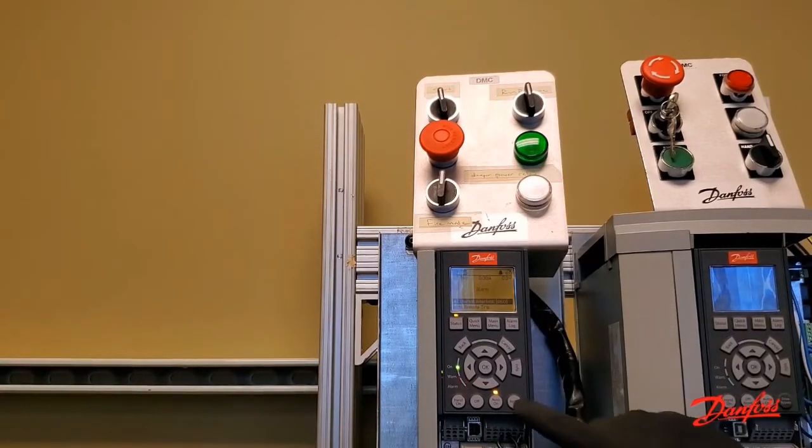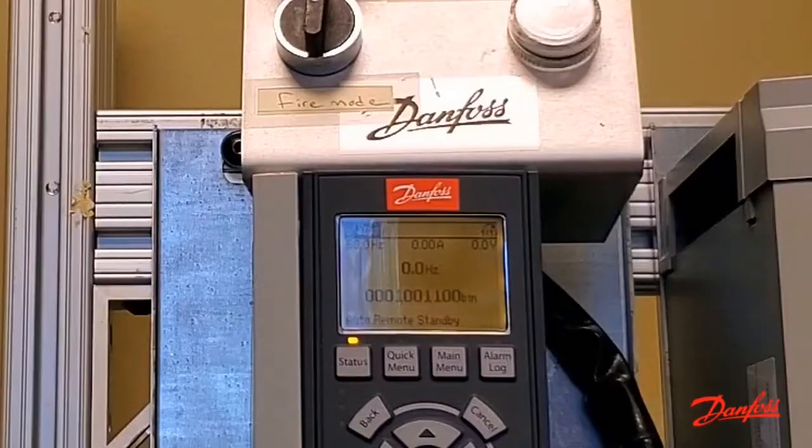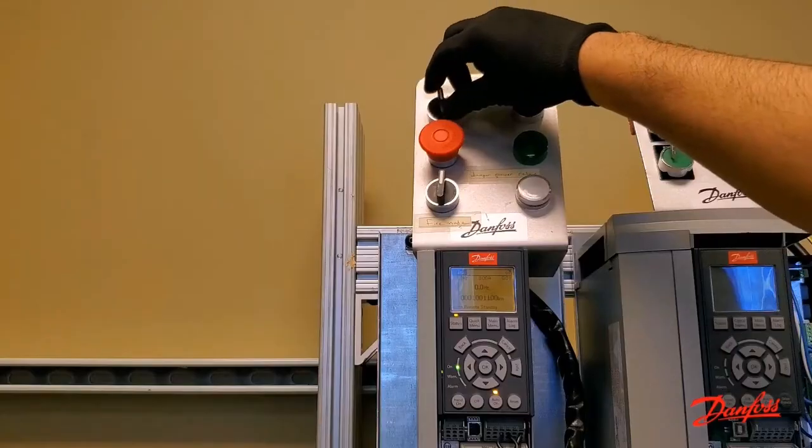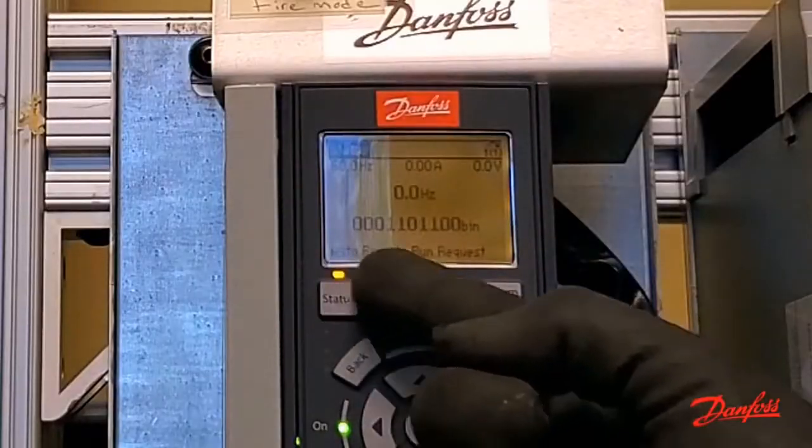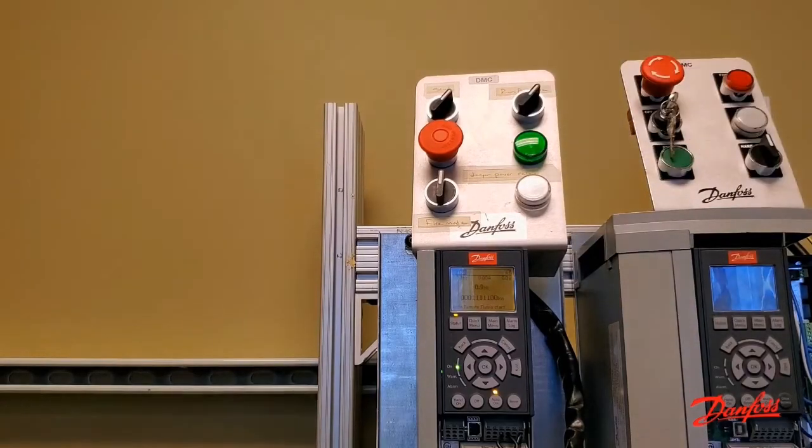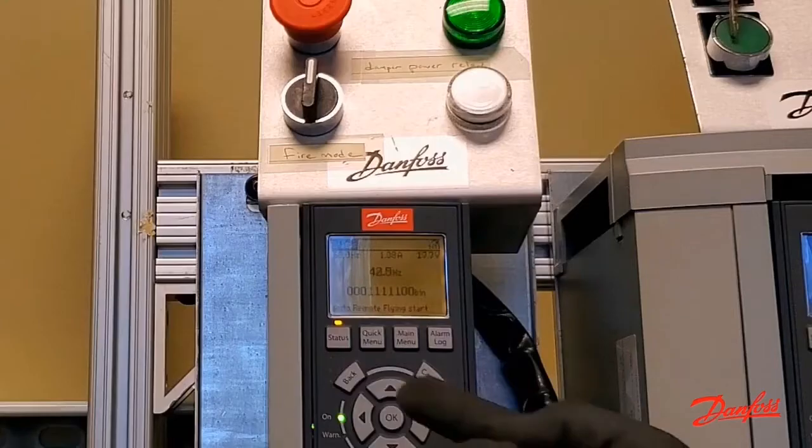Auto-remote standby means you're missing the run command. And auto-remote run request means you're missing the run permissive signal. All three of these signals are required for the panel to run in both drive and bypass.